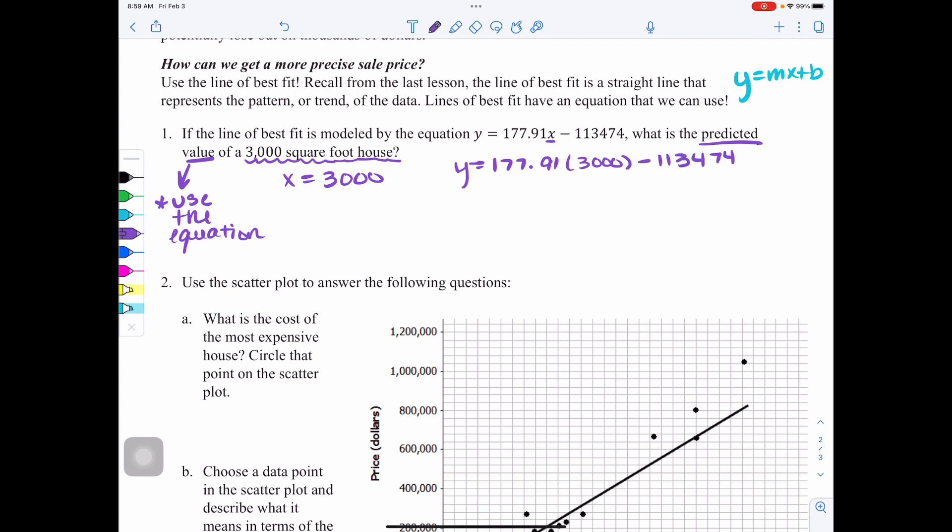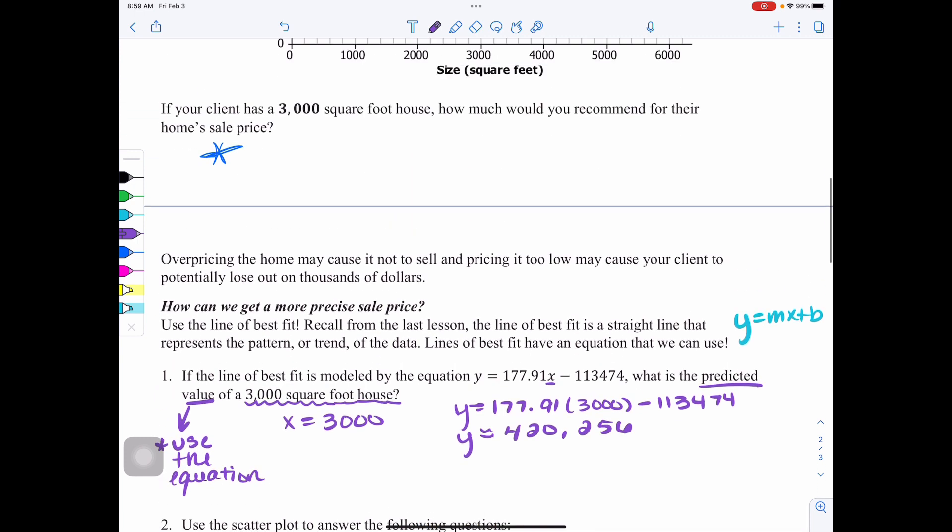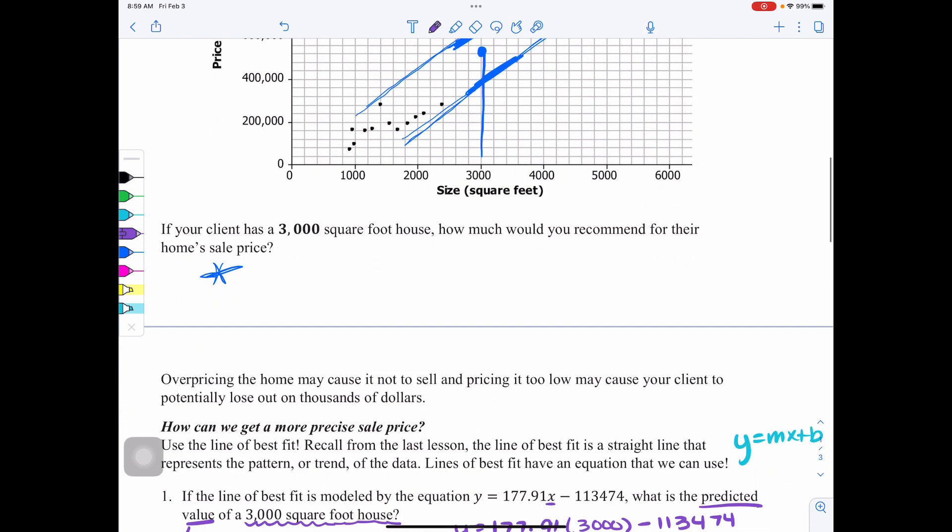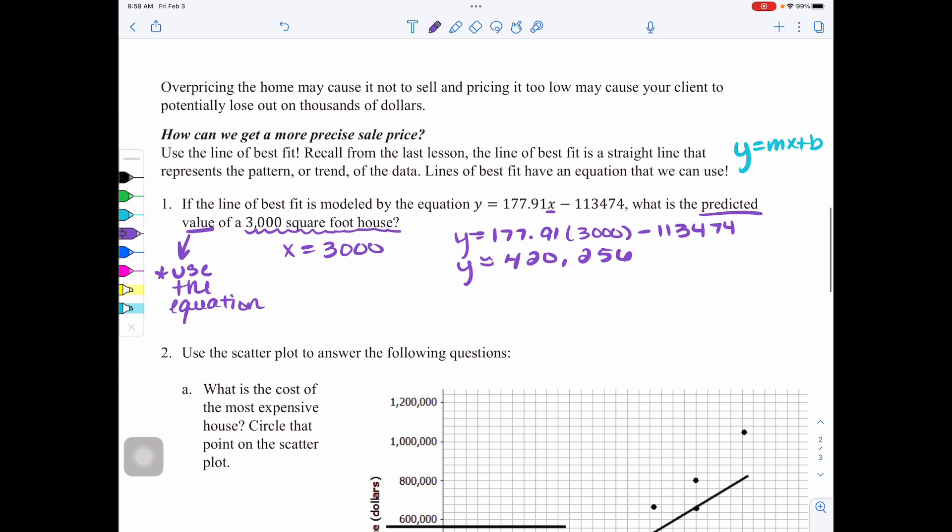I can then go to my calculator and type that in to find out that y is approximately, because you have to do some rounding, we're going to do 420,256. Now you can kind of go back and take a look at the prediction you made. Were you close? How far off were you? Obviously, the best way to get the best prediction, we now know, is to use the equation instead. Use the equation to determine either the x or the y. It can go either way to make the best prediction.